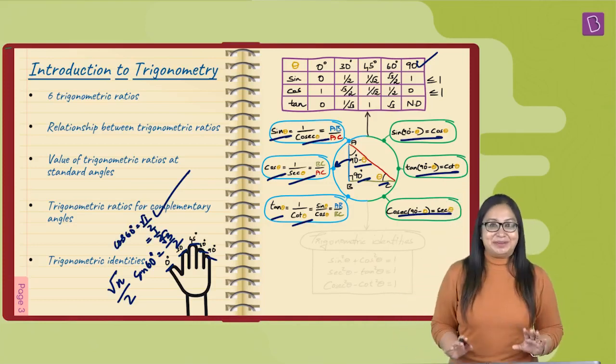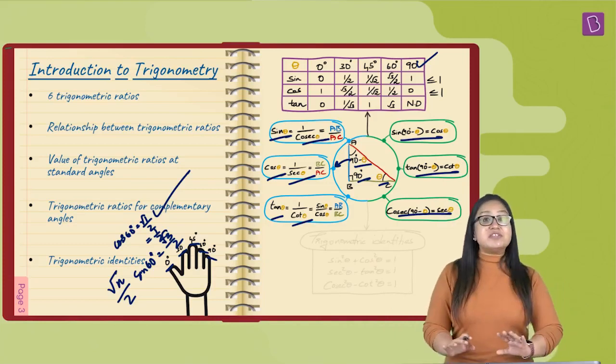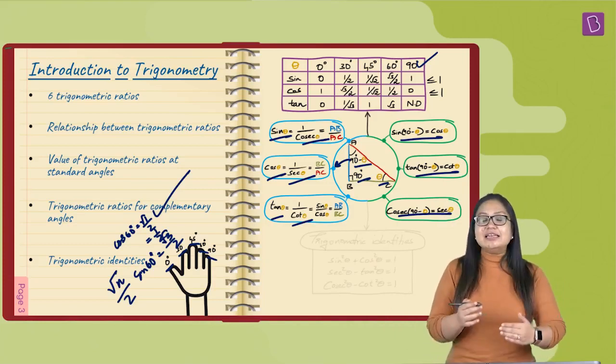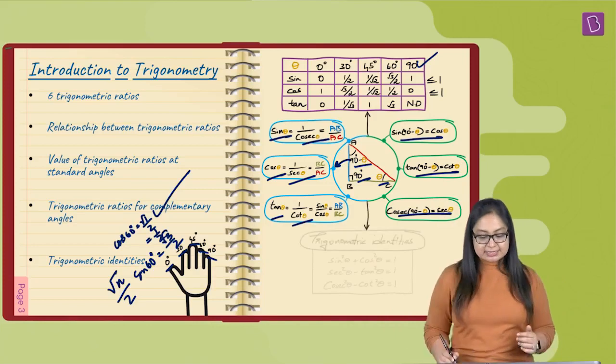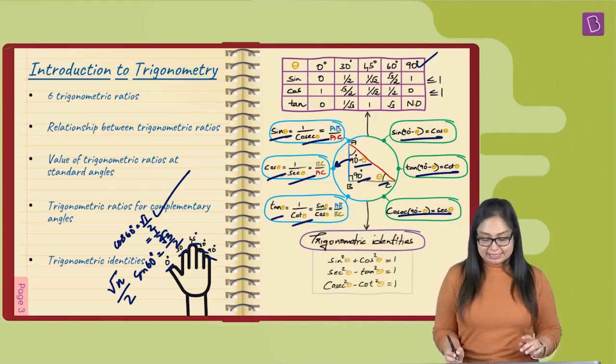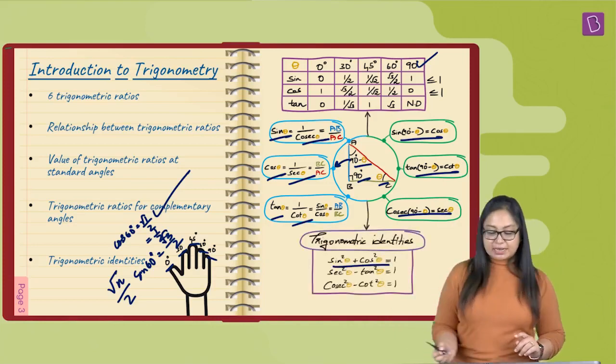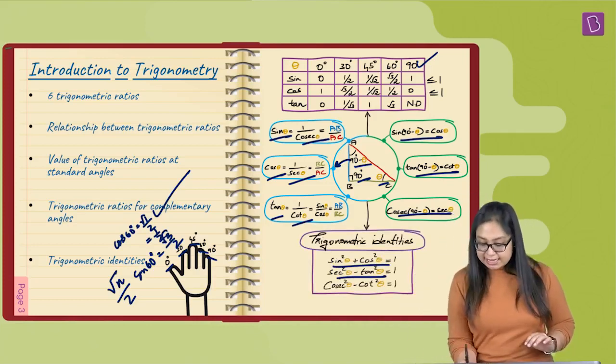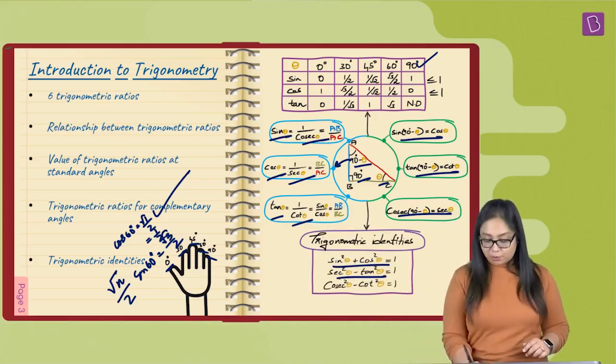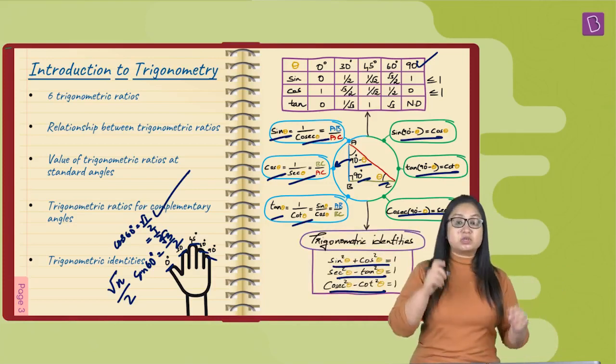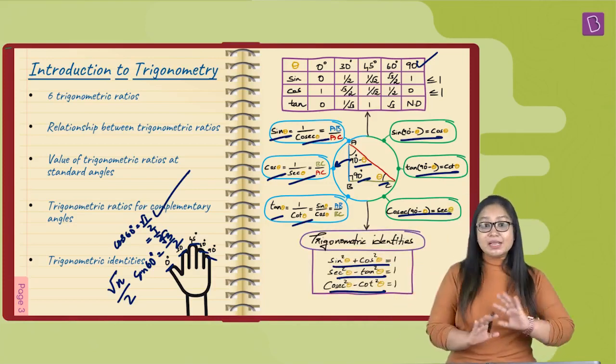Alright, let's get back to the mind map here. So, we have all of these concepts connected. Finally, the last concept that is 3 trigonometric identities. You can see sin square theta plus cos square theta equal to 1, secant square theta minus tan square theta equal to 1, and secant square theta minus cot square theta equal to 1.